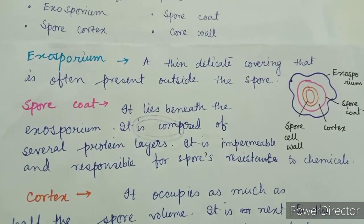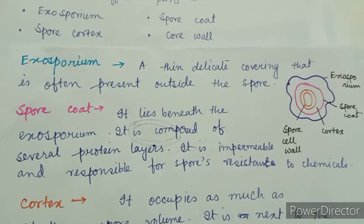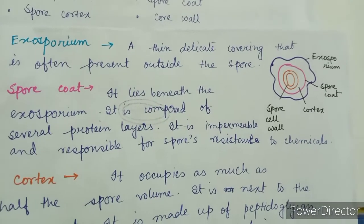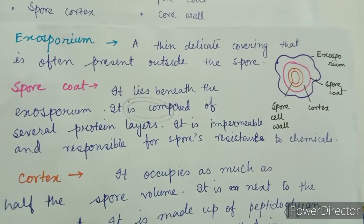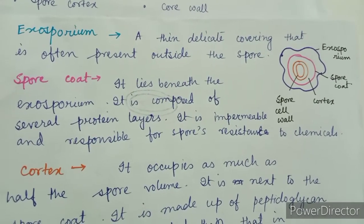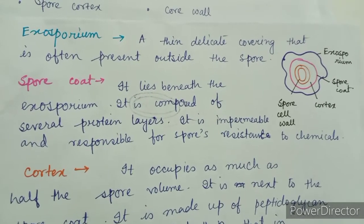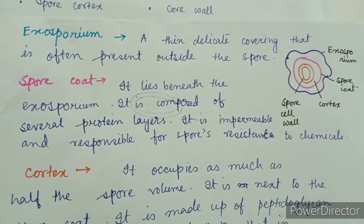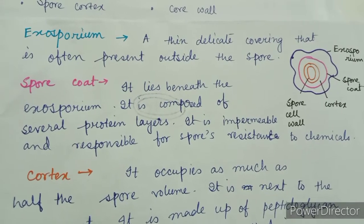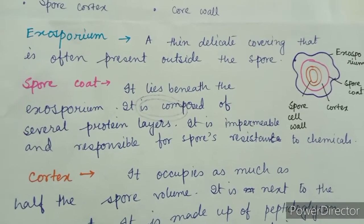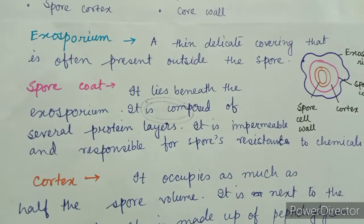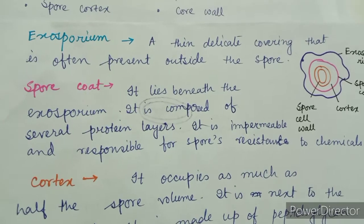Just under the exosporium lies the spore coat. It is composed of several protein layers, is impermeable, and is responsible for the spore's resistance to chemicals because it is composed of calcium dipicolinate or dipicolinic acid.